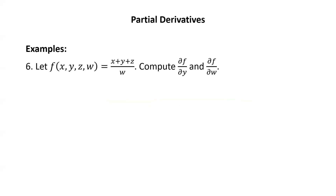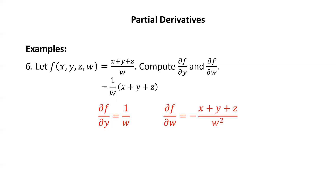Let f of x, y, z, w equal x plus y plus z over w. Compute partial f with respect to y and partial f with respect to w. We can rewrite this as one over w times x plus y plus z. The partial with respect to y is one over w times the derivative of x plus y plus z, which gives one over w. For the partial with respect to w, we have a constant over w, so the derivative is negative that constant over w squared, giving negative x plus y plus z over w squared.